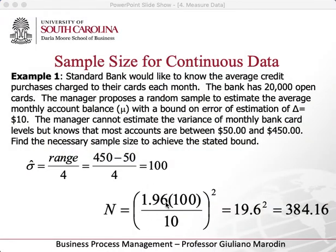Where does 1.96 come from? That's a 95% confidence level. Remember the Z-score table — the table with a bunch of numbers that looks like a matrix. At 95% confidence level, the Z-score is 1.96 standard deviations. So: 1.96 times 100, which is the estimated standard deviation, divided by 10, all squared — gives us 384.16. So we need 385 observations.